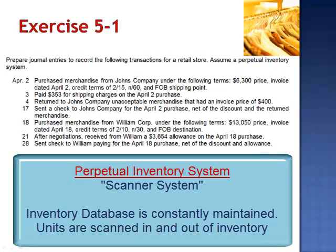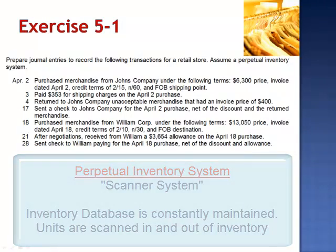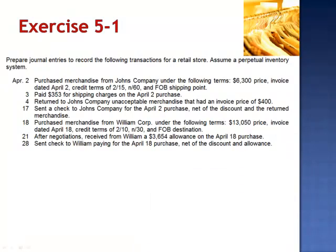A perpetual inventory system is a scanner system. We see them every time we go to the store. As the cashier swipes the item across the scanner, the UPC code allows the system to do two things: first, to record the amount that will be charged to you, the customer — the amount of the sale. And simultaneously, the cost of the unit is removed from the inventory database. So throughout this chapter, we're going to be talking about maintaining the inventory database. So let's look at the journal entries.